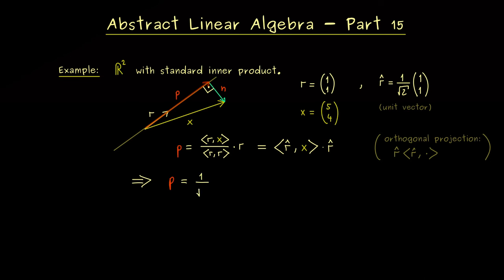Not hard at all. We calculate the standard inner product and then we see we just have 5 plus 4 here, and of course also times our vector r-hat.